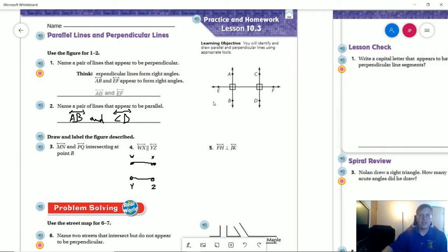So number two, name a pair of lines that appear to be parallel. That would be this guy here and this guy here. So A, B, and C, D.